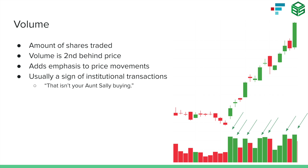Volume adds emphasis to price movements — it tells us the amount of participants in the game of tug of war. If there was a strong price movement and volume was up a bunch, that game of tug of war was much more important than previous days with fewer participants. As technical analysts, we're looking to follow the massive institutions that can drive a stock's price on a multi-month or multi-week move. Institutions are moving billions of dollars, and if they accumulate a stock over weeks or months, that's going to increase price significantly. There's a saying: no matter how slow an elephant gets in a tub, the water level is going to rise — so price will rise and we'll be able to see that through volume.